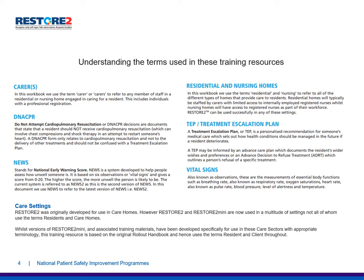TEPs or treatment escalation plans are personalised recommendations for someone's medical care, which sets out how health conditions should be managed in the future if a resident deteriorates. Vital signs, also known as observations, are the measurements of essential bodily functions such as breathing rate or respiratory rate, oxygen saturations, heart rate also known as pulse rate, blood pressure, level of alertness, and temperature.